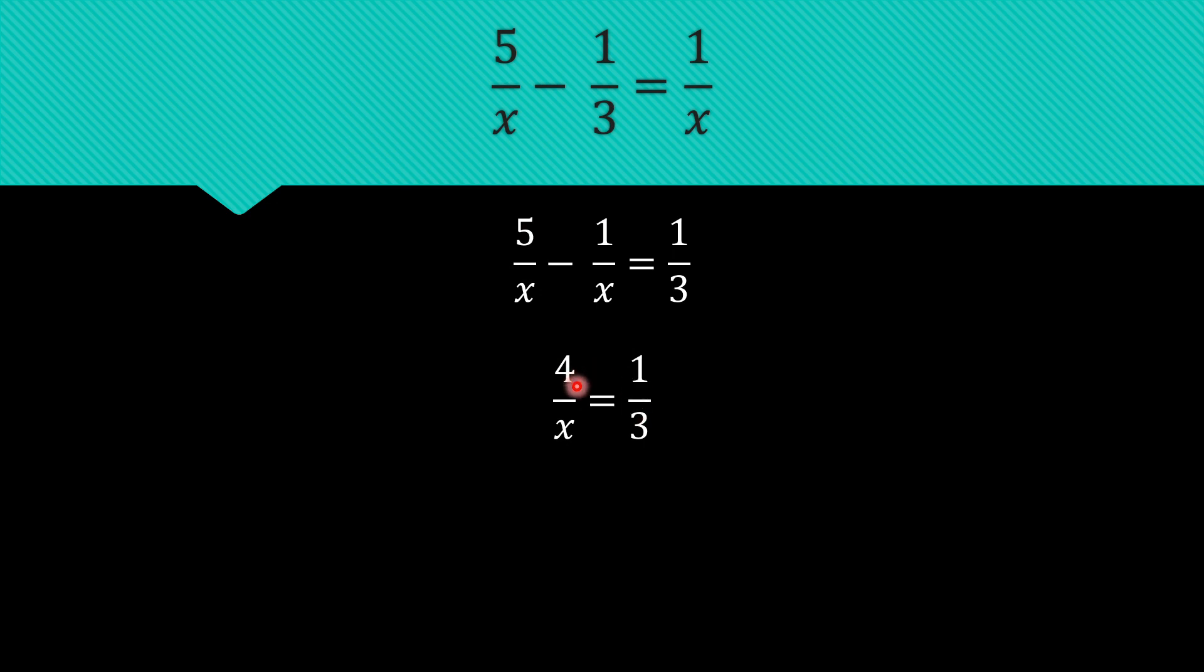From here, we can apply cross multiplication. So cross multiplication, we multiply x by 1 and 3 by 4.